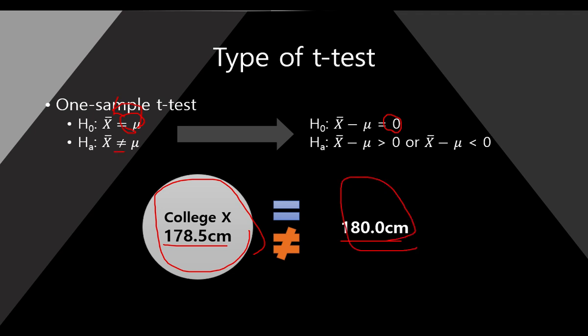So here, it is the same: just larger than zero or less than zero. This is the second type of T-Test, one-sample T-Test.